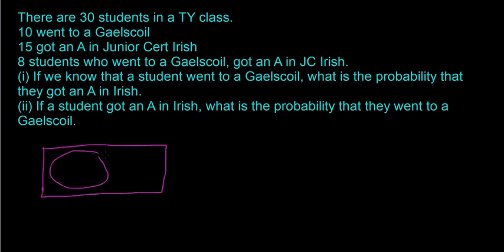Big box, circle, circle. It's going to be 8 in the middle. There's going to be 2 here and 7 here. And then that means it's going to be 13 out here. So this is G for Gaelscoil. This is A for got an A. And everything else, U equals 30.